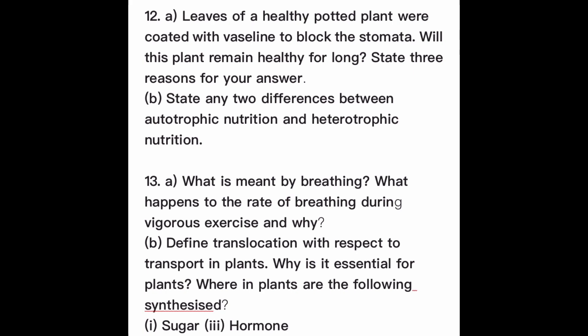Wherein plants are the following synthesized? Sugar gets synthesized in the leaf by the process of photosynthesis. Hormones get synthesized from the root or shoot tip — auxin is released from the root tip or shoot tip. Cytokinin is found in the inter-nodal portion and promotes cell division. Gibberellin is responsible for the elongation of stem and its location is also inter-nodal.